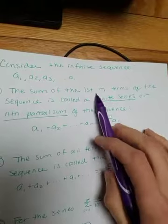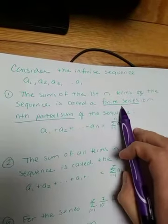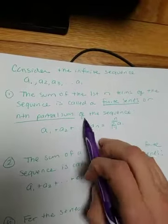The sum of the first n terms of the sequence is called a finite series, which is also sometimes referred to as the nth partial sum of the sequence.